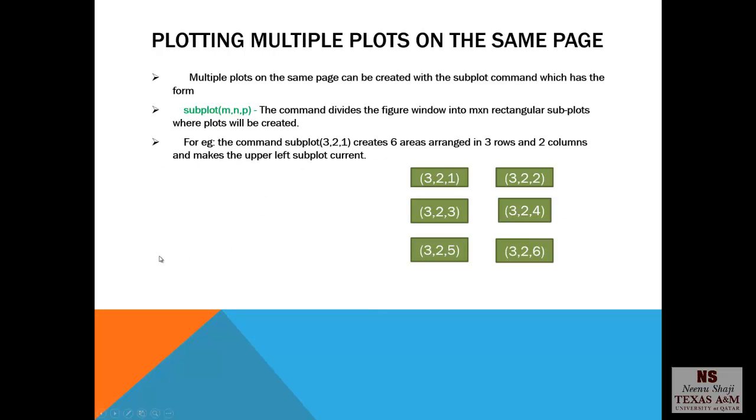Plotting multiple plots on the same page. Multiple plots on the same page can be created with the subplot command which has the form subplot m,n,p. That means there are three parameters. m refers to the number of rows, n to the number of columns and p the position where you want to display the graph. So we have 3,2,1, 3,2,2, 3,2,3, 3,2,4, 3,2,5 and 3,2,6. So this command creates six areas arranged in three rows and two columns and then each position is chosen according to the command.